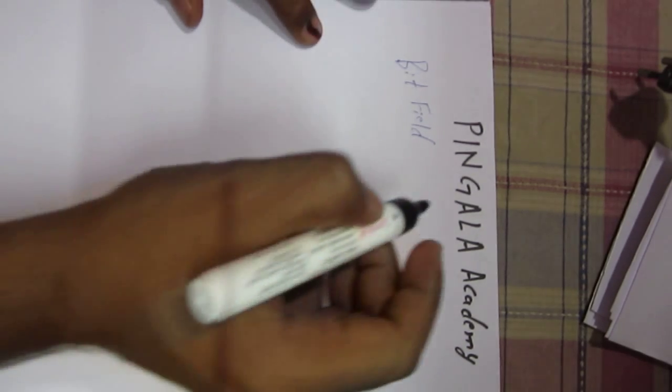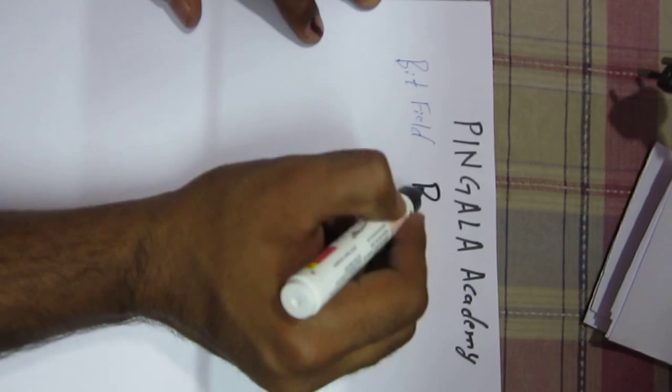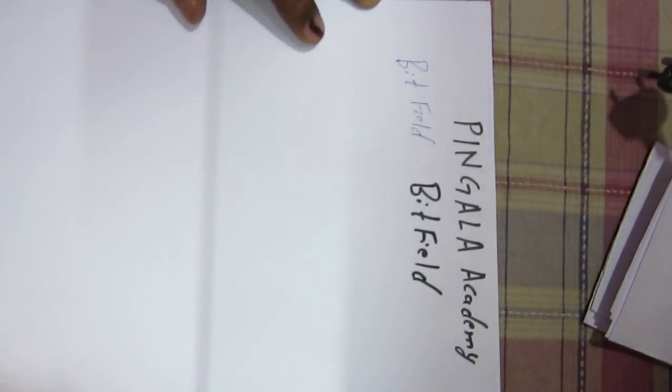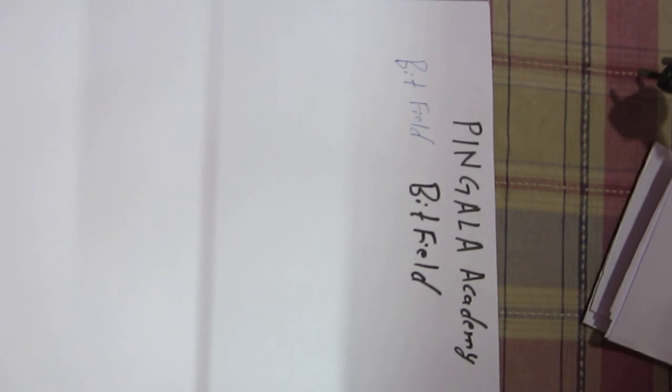A bit field is a data type, or we can say bit field is for the storage of data inside a data type. This means it allows packing of data inside the data type.